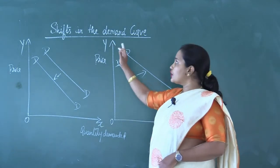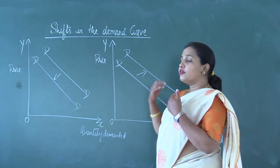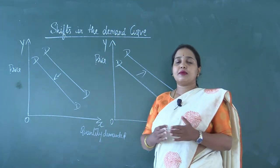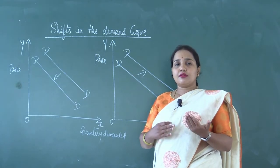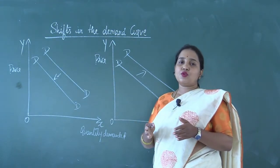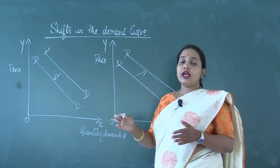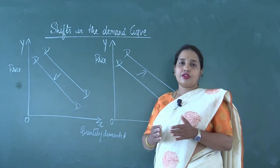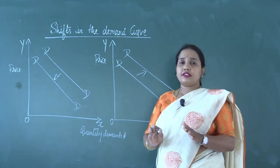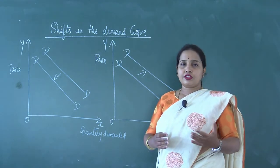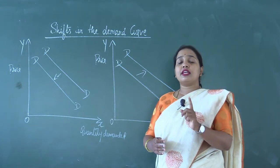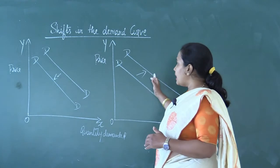Let us understand shifts in the demand curve with the help of a diagram. We have learnt that when there is a change in price, there will be a change in demand and the demand curve moves either downward or upward. A fall in price leads to expansion of demand and the demand curve moves downward; a rise in price leads to contraction of demand and the demand curve moves upward. There are other factors — determinants of demand — like prices of related goods, income of the consumer, and taste and preferences. When any one of these factors changes, the demand curve does not take a movement; rather, it shifts rightward or leftward.